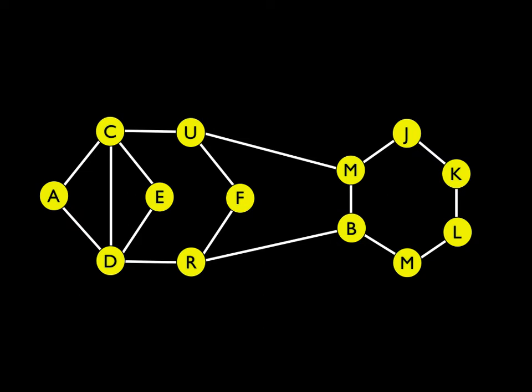For our breadth-first search, it's really very simple. I could pick any of these nodes and start, then compute the breadth-first search. So I will pick B for BBN — Bolt-Baranek-Newman — and compute the shortest path to all the other nodes using a breadth-first search. We're starting at this B node, which is node zero, ground zero for our breadth-first search.